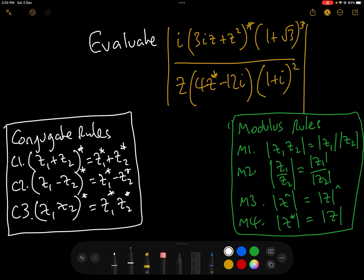Now the first thing we're going to do is using the rules modulus M1 and M2, we can split this rather horrific one modulus expression into six modulus expressions, like so. And then we can evaluate each one, one by one, and see where we get.